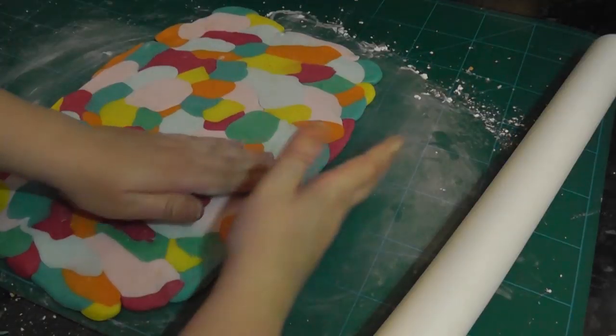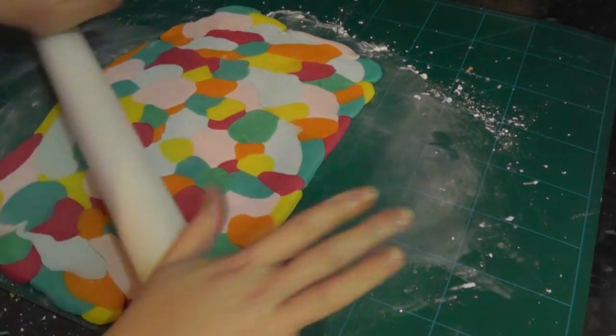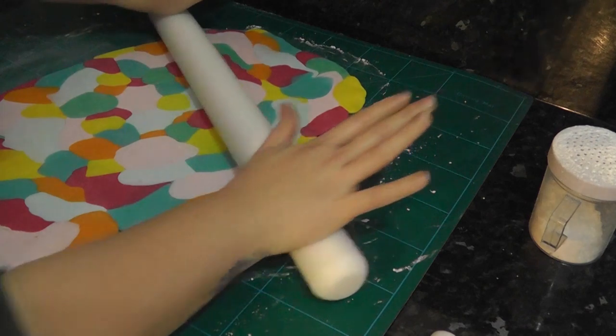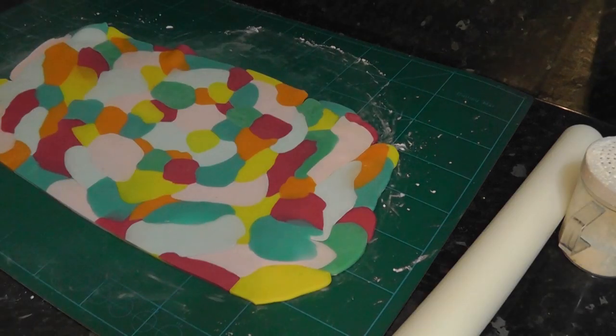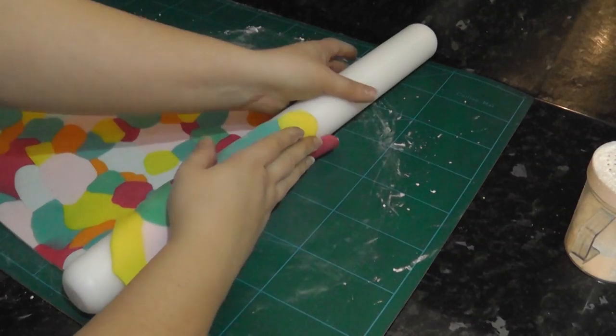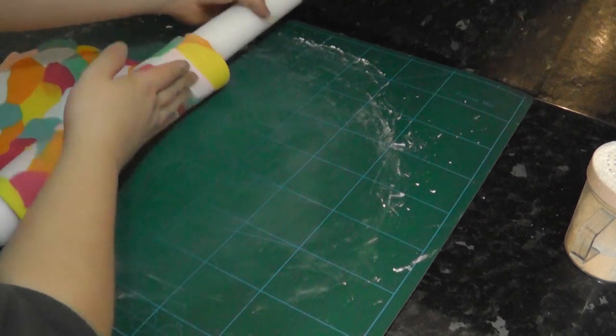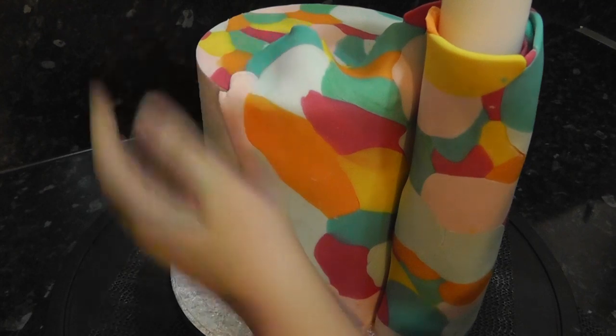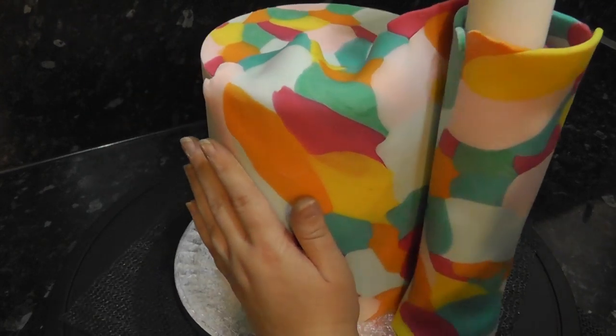Trim off the bottom and wrap it around your rolling pin to make it easier to handle. Stand the pin up against the cake, unrolling the paste and sticking it down as you go.